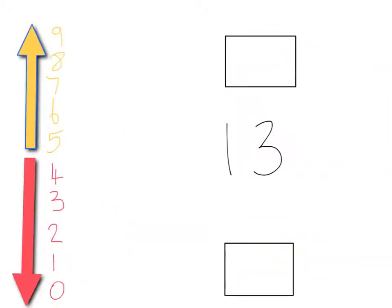We're going to begin by rounding to the nearest ten and we'll demonstrate with the number thirteen. The first thing we need to do is know which multiples of ten thirteen lies between. Its lower multiple is ten and its upper multiple is twenty. We then need to look at its units, which in this case is three.